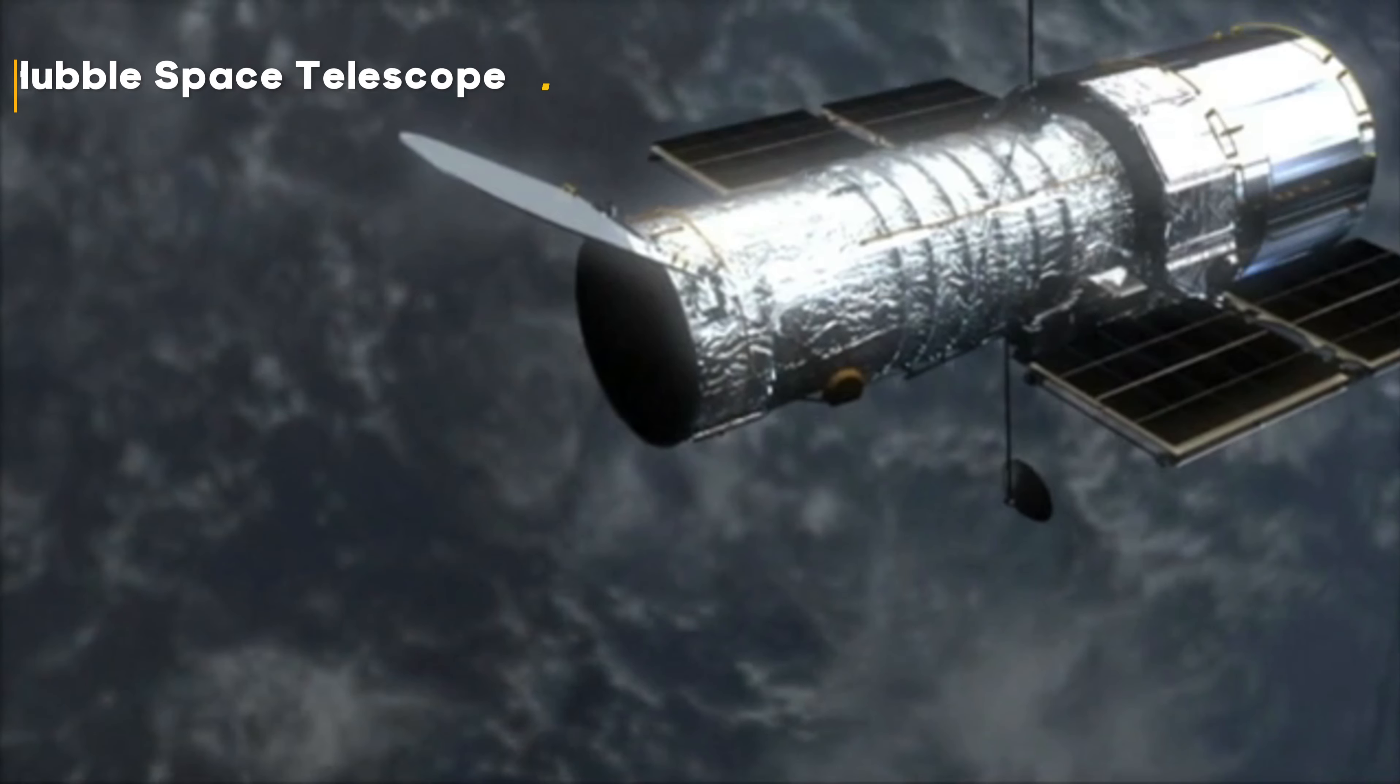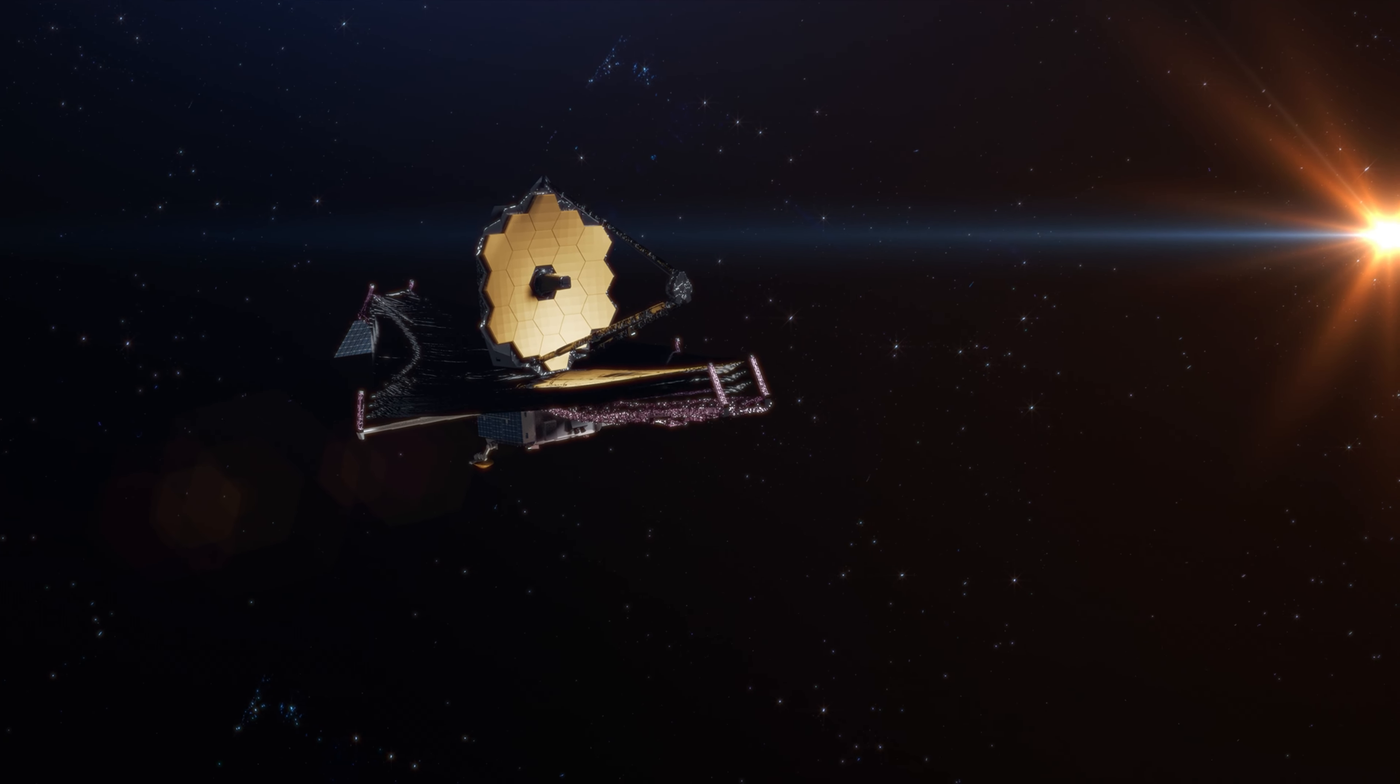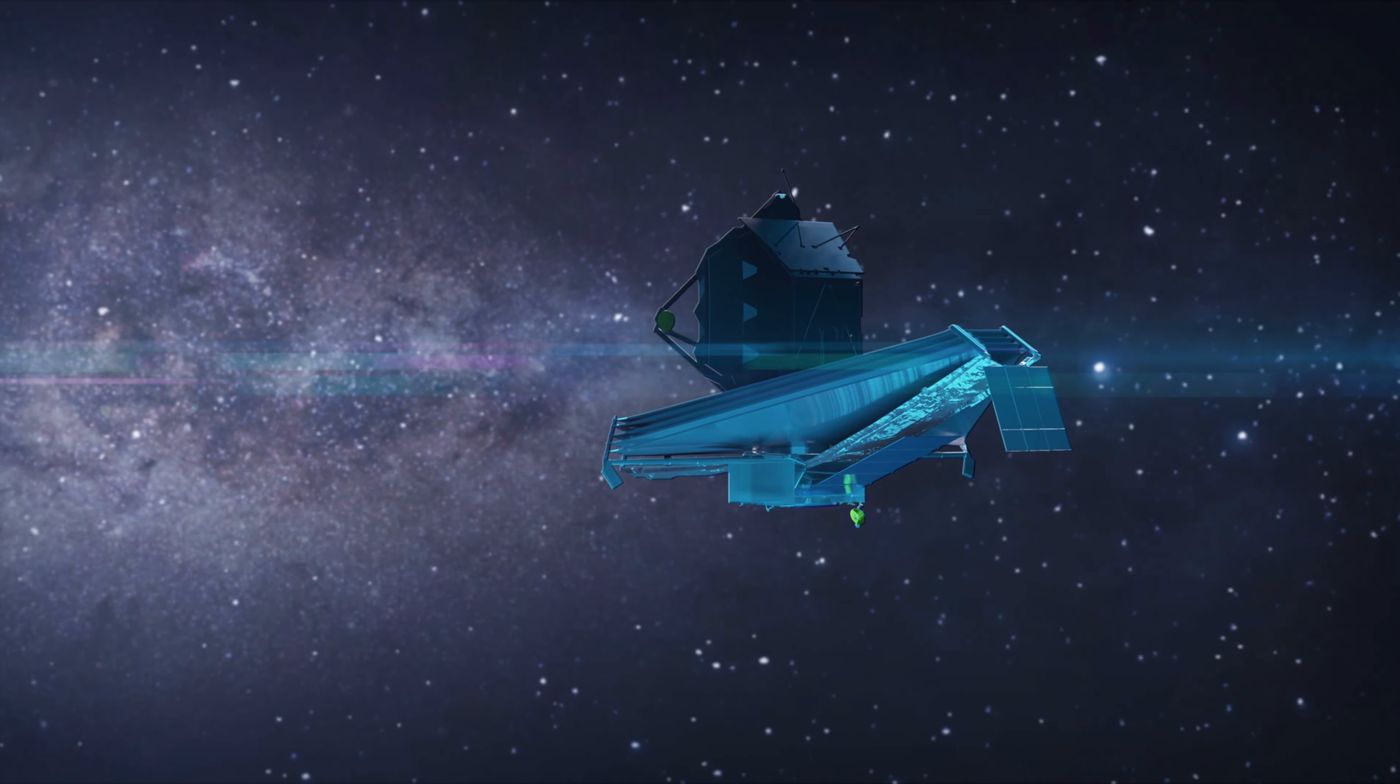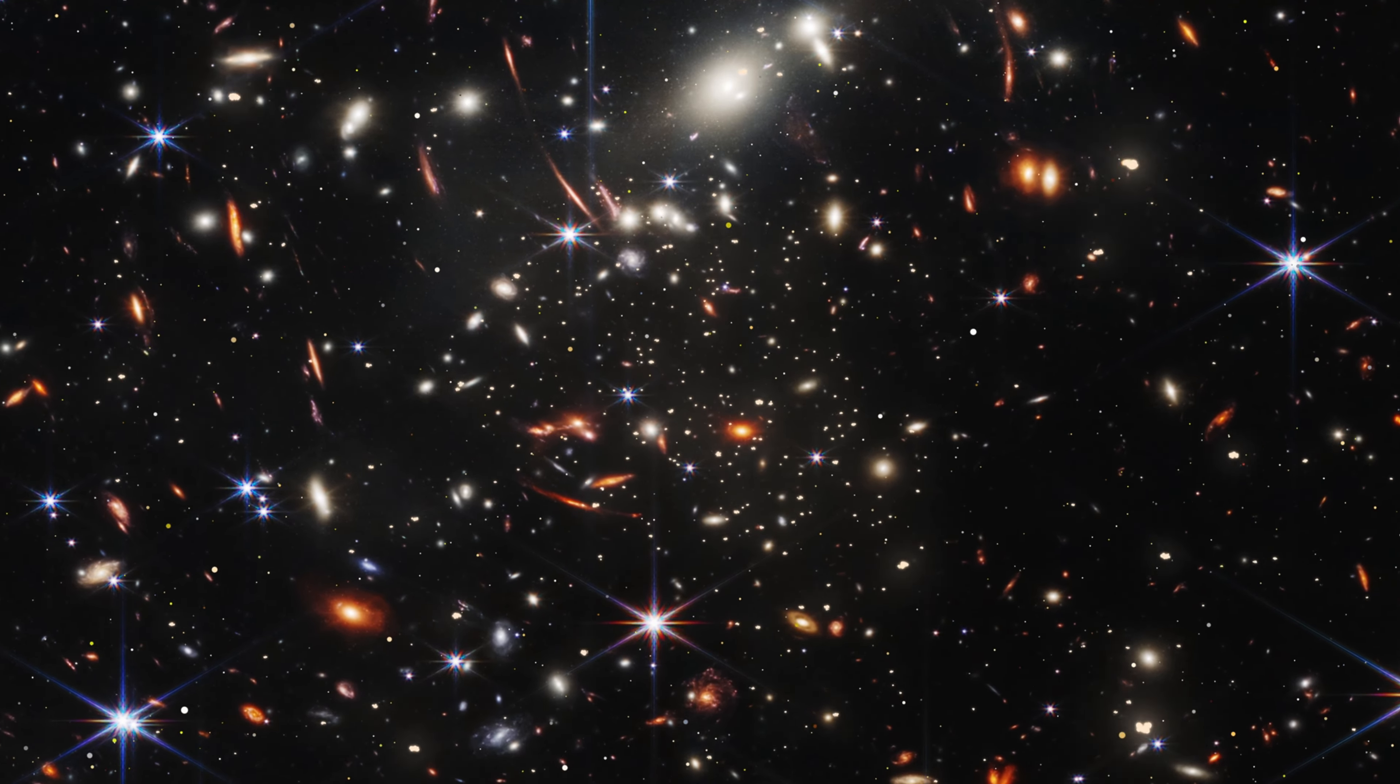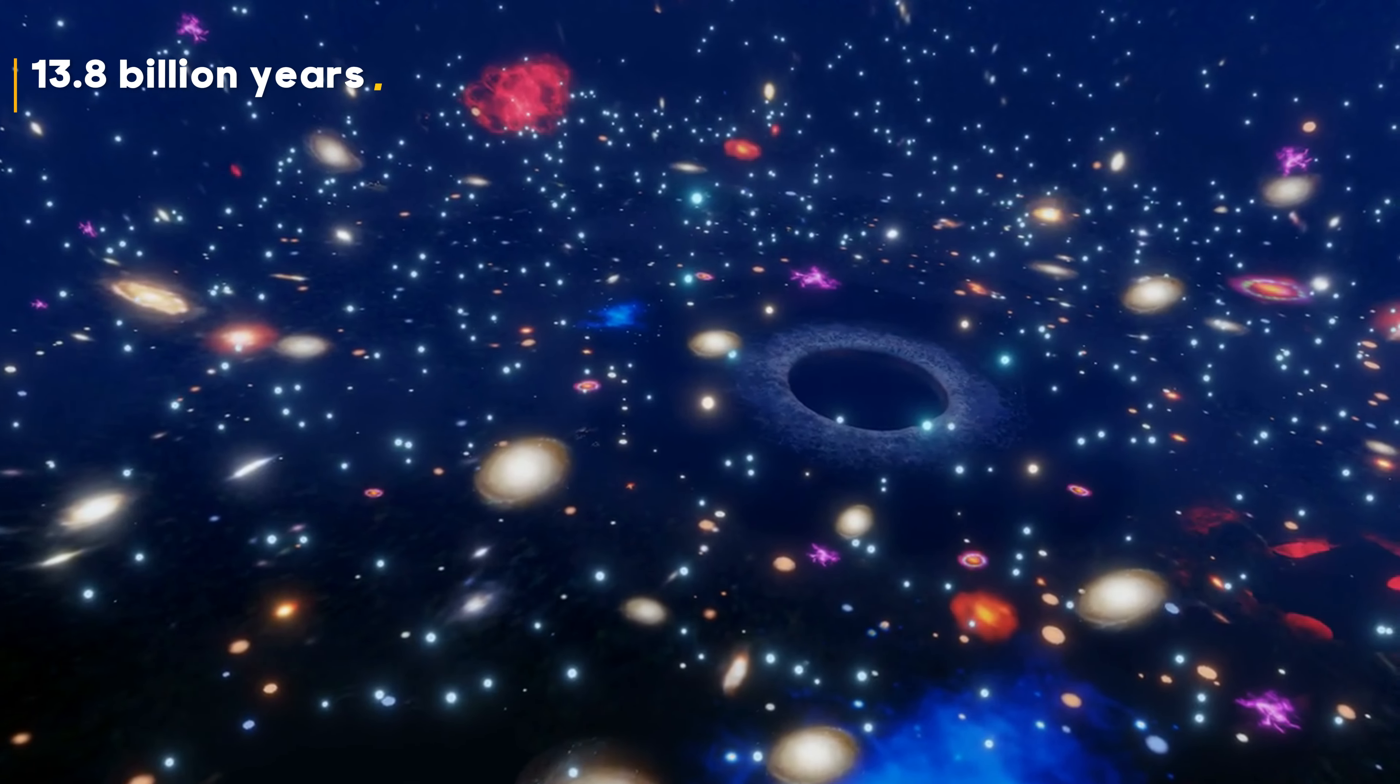But then came the Hubble Space Telescope, James Webb's predecessor, and in 1997, its observations triumphantly overcame the wall we'd hit by announcing that the universe was not expanding at a constant rate, but at an accelerating one, due to an unknown, elusive force named dark energy. When we factor in dark energy into the universe's expansion history, astronomers arrive at an age for the universe that we now believe to be correct of 13.8 billion years.